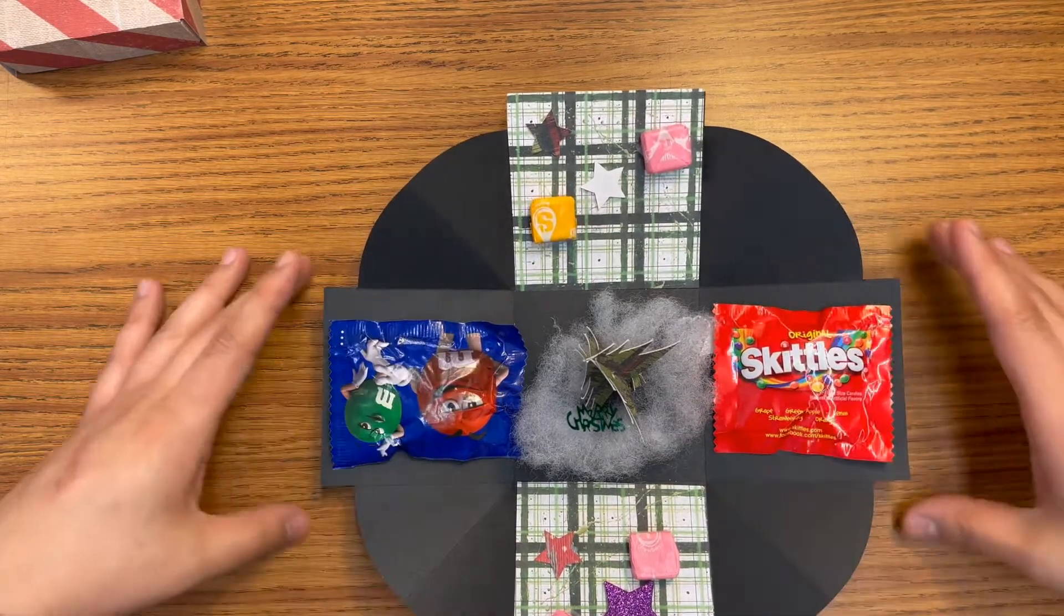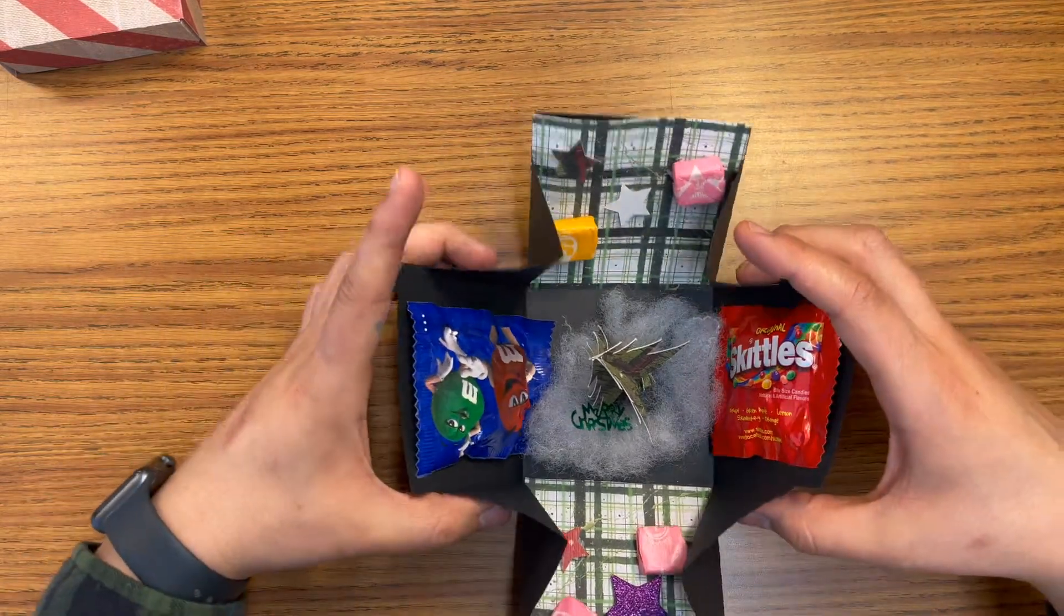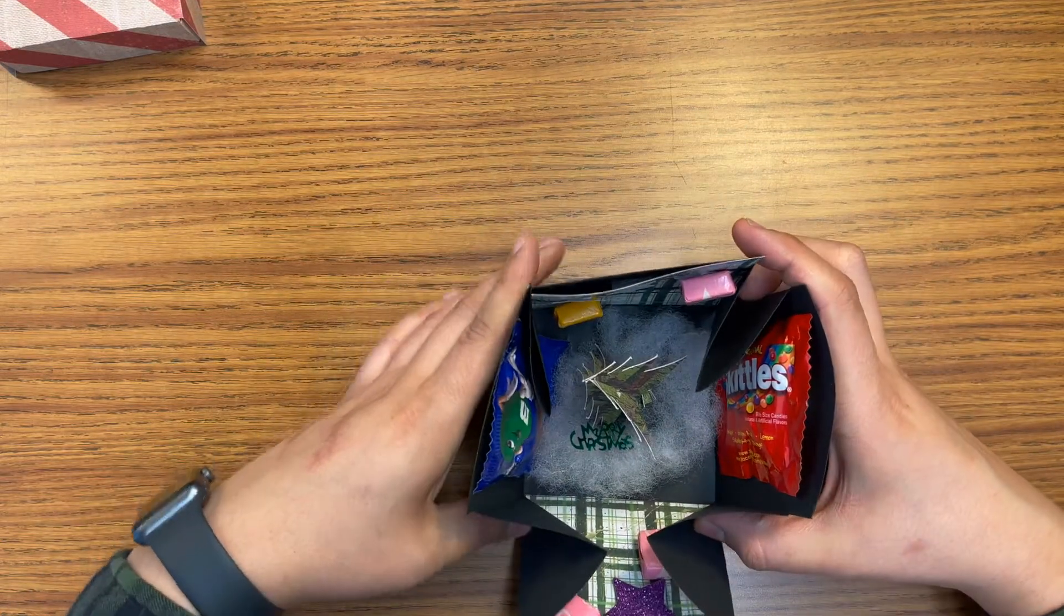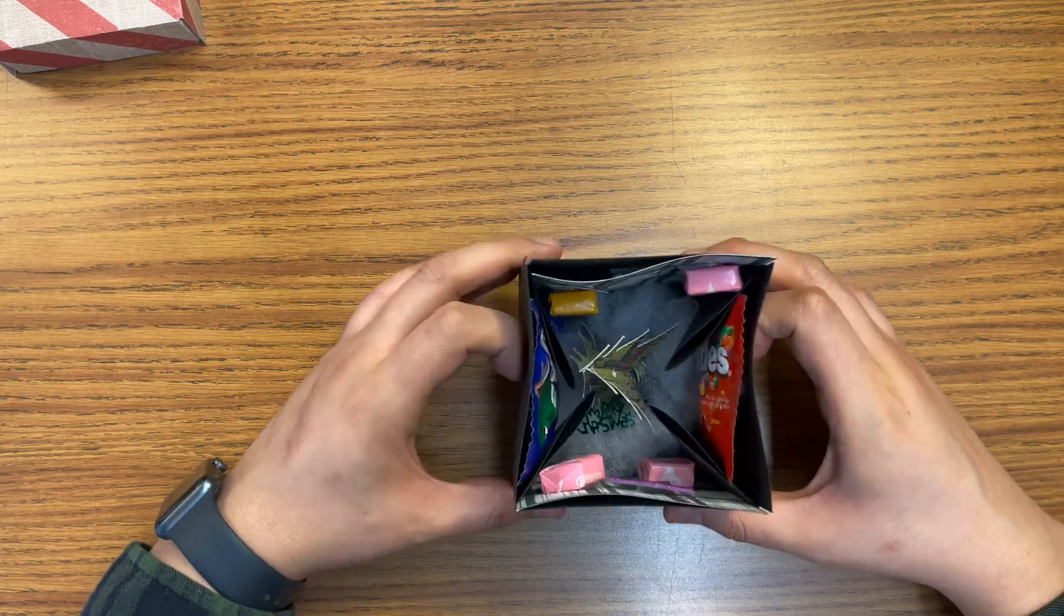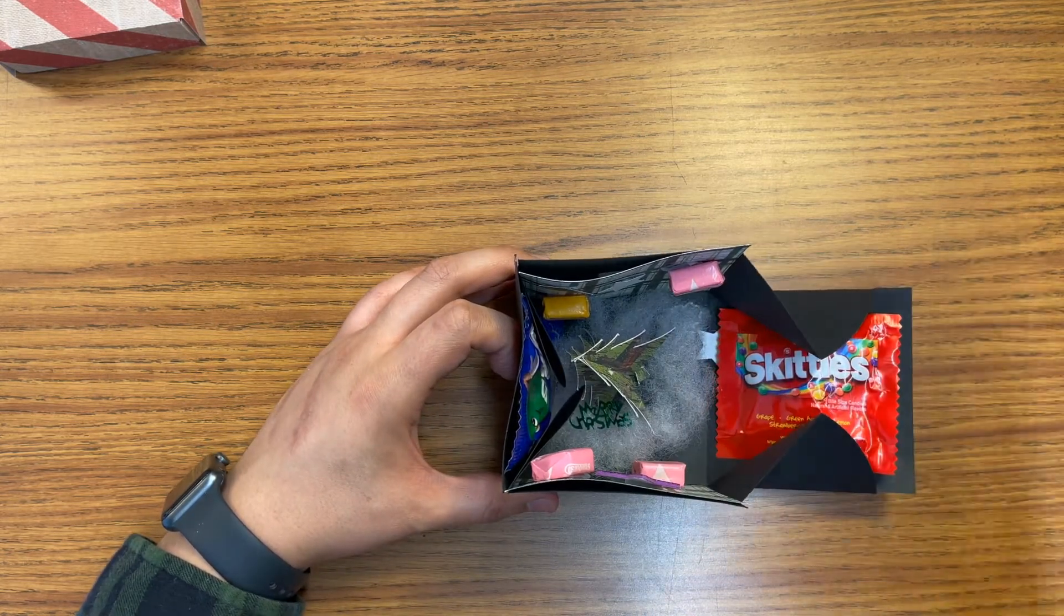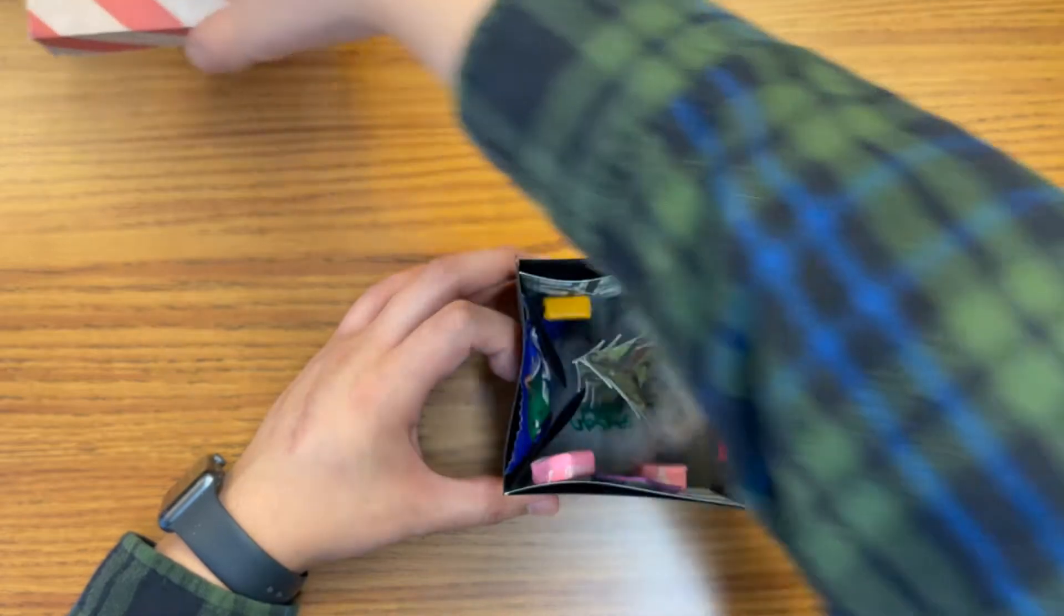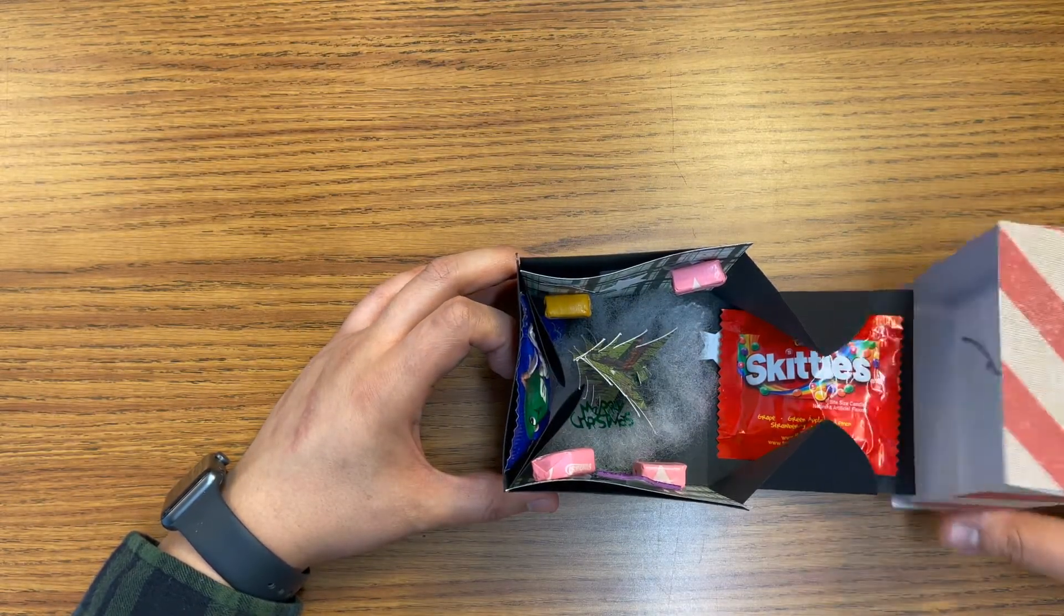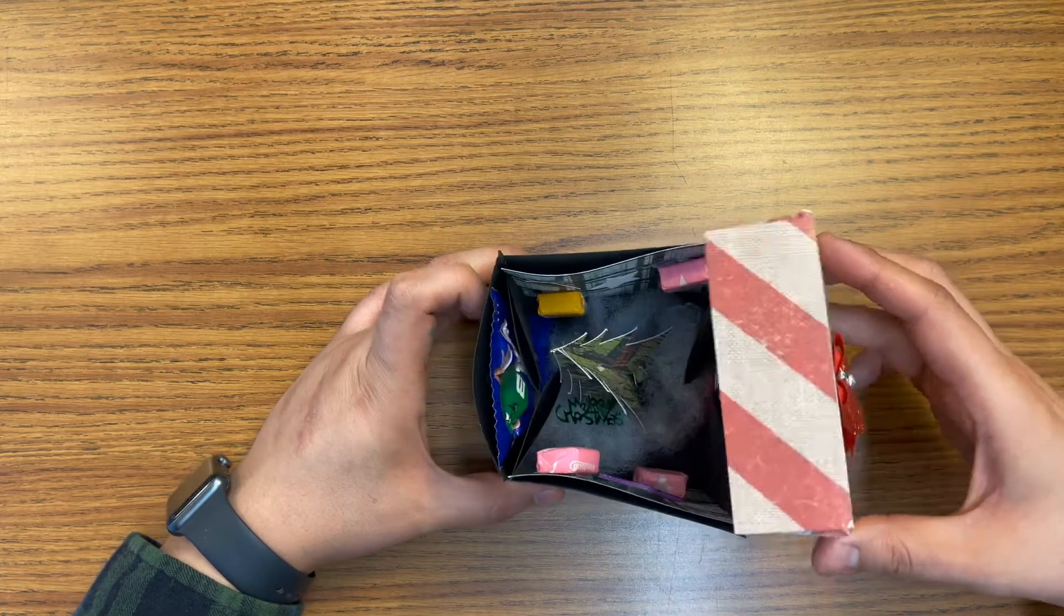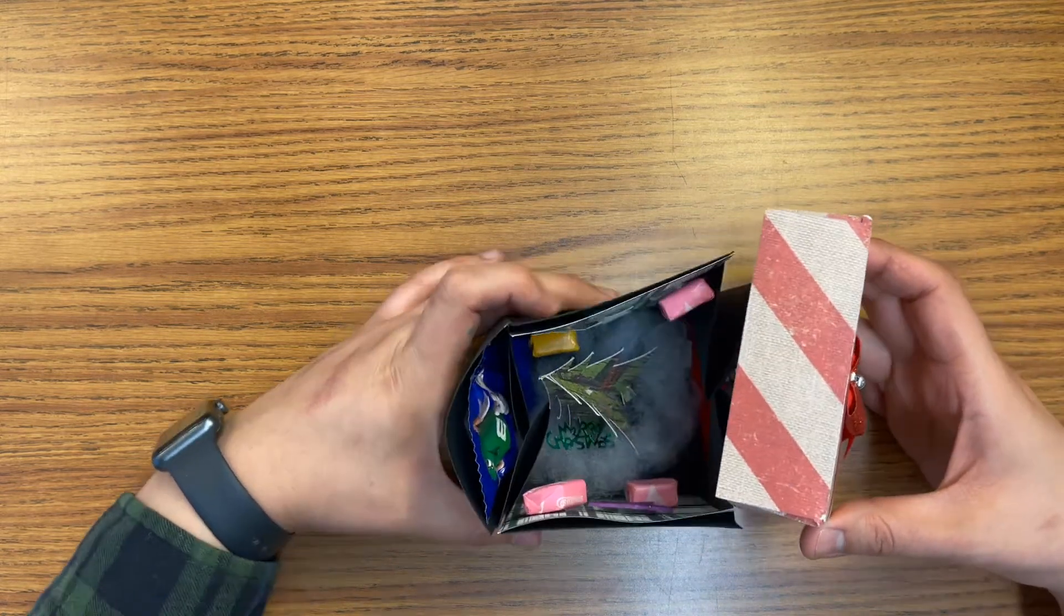everything's either glued or taped down, go ahead and start folding the box and you're going to just hang on to one side. That side is going to fall, of course.